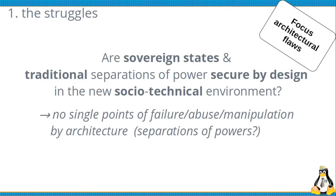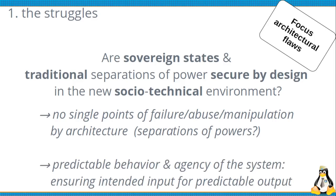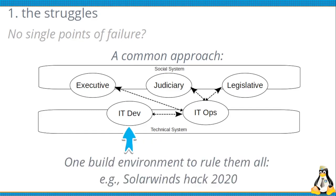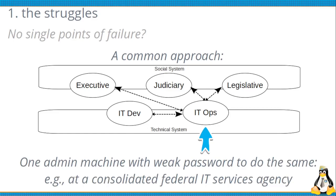In purely social systems, we already have the separation of powers that can fulfill this purpose. On the other hand, we need predictable behavior of the system — we need to ensure intended input produces predictable output, so I know what I'm allowed to do without getting punished. A common approach here already has two single points of failure: IT operations and the development of IT systems affecting the whole social system. A clear example is the SolarWinds hack of 2020, where many public agencies, private customers, and people were affected because of a hack in the build environment — the part where usable software is created — and also from one weak admin password in the IT development environment.